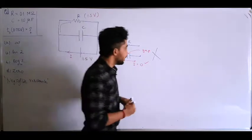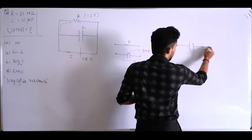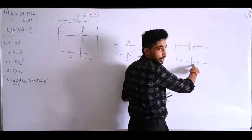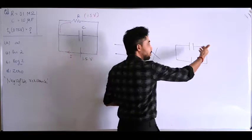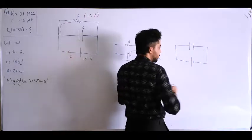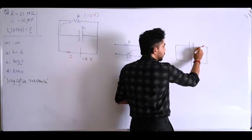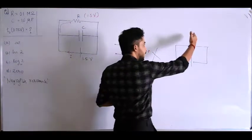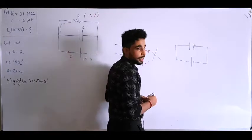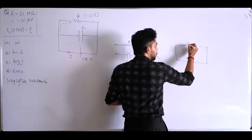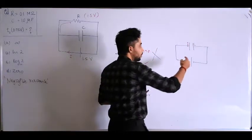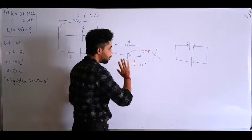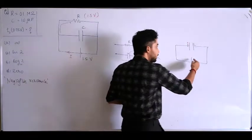Let's understand this more clearly. Consider a capacitor circuit — there is a negative potential, and in the conducting wire there are free electrons. Because of the negative potential, electrons are repelled and collect on one plate as negative charge. As negative charges build up on that plate, they repel electrons from the other plate, creating a buildup of positive charges there. So charges are flowing in the wires but not across the capacitor itself — the current cannot jump across the gap.